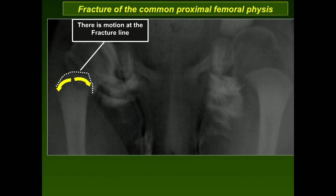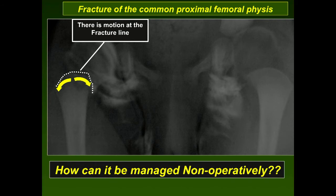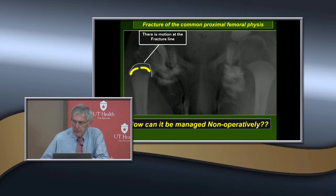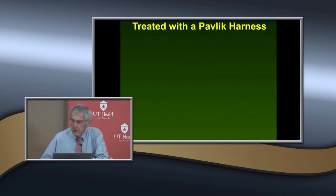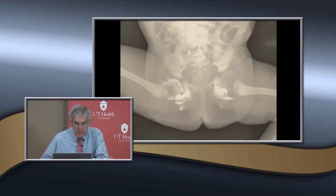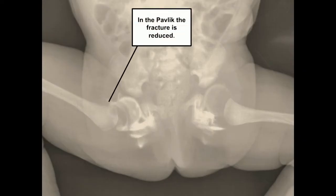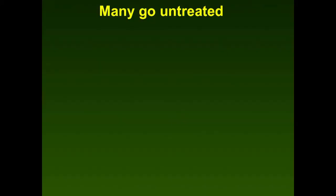This fracture occurs before the child has even ossified the femoral head, making it very difficult to manage. You can't use blade plates; it's difficult to visualize pins. Treatment can be done non-operatively with a Pavlik harness, which we've found to be effective in this age group — it reduces the fracture. Because it's a physeal fracture in a small infant, it heals very rapidly. You place them in the Pavlik harness for about three or four weeks and then gradually wean them.